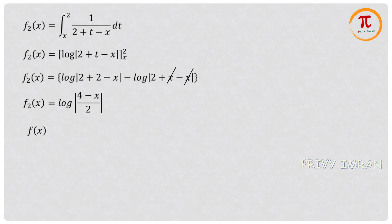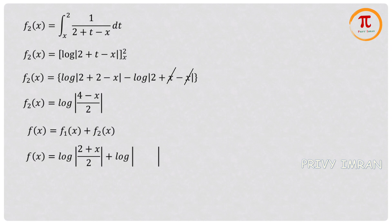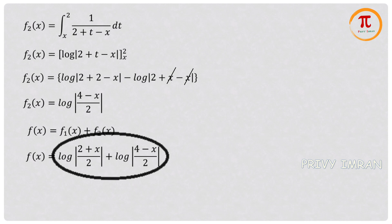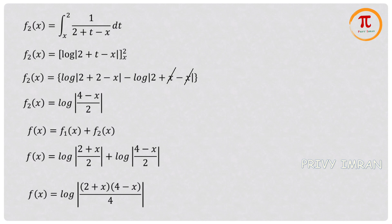Now let me add both functions. Since it is in the form of log a plus log b, which equals log(ab), I multiply the numerator terms (2 + x) and (4 - x). So f(x) = log[(2 + x)(4 - x)] minus log 4, which can be written as log[(2 + x)(4 - x)/4].